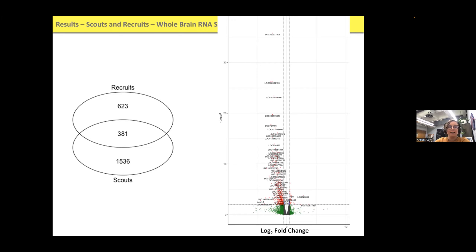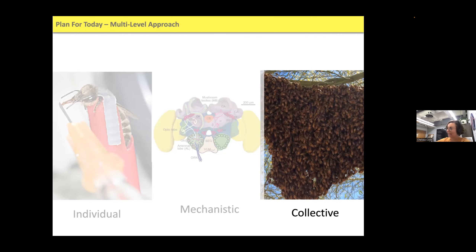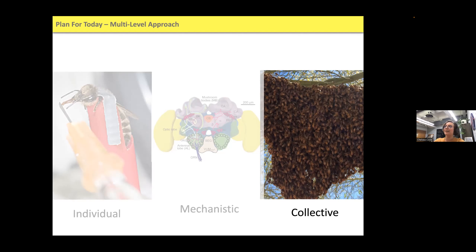Now we have a picture of what's going on at the individual level and in the brains of these bees. As behavioral ecologists, we always want to know how this scales to collective behavior — where the rubber meets the road, where the selection happens, why are these bees different and how does this help the colony? The rest of my talk will be focused on the collective behavior. This was published in PNAS in 2020 — at perfect timing, I was interviewing for jobs and got a job offer the same week it was published.